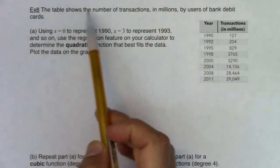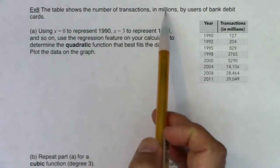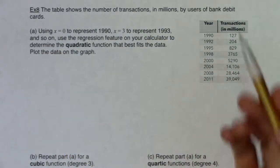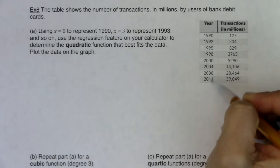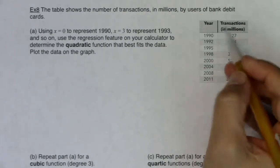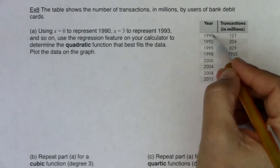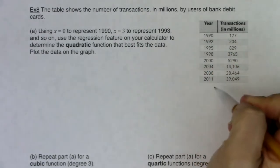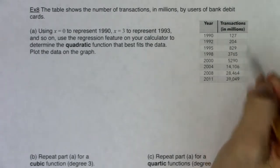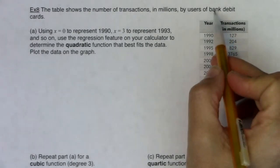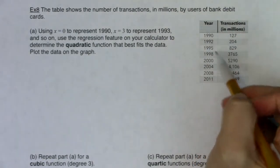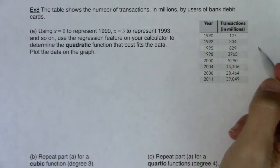It says the table shows the number of transactions in millions by users of bank debit cards. If I take a look at my table, I've got years here, so I've got time as some kind of independent variable. I'm probably going to use a base year because I don't want to deal with the number 1990 and 2011. Those are large numbers. And over here I have transactions of bank debit cards.